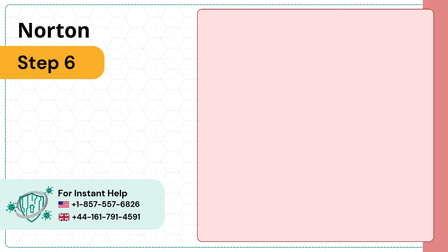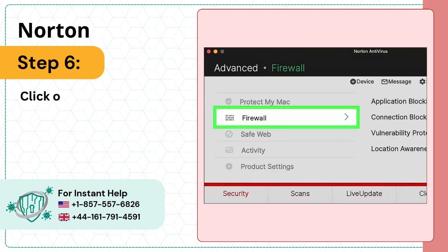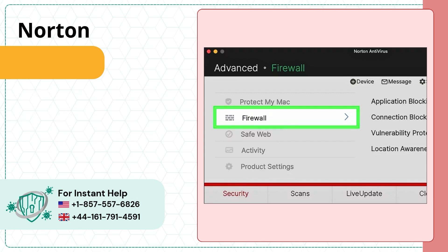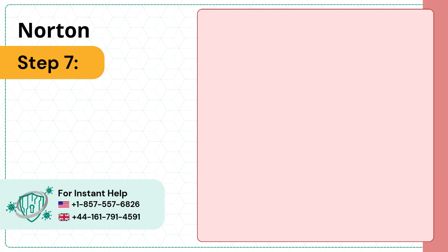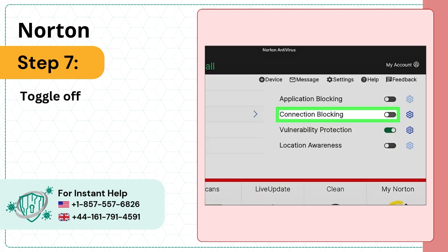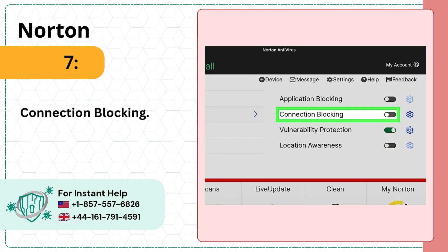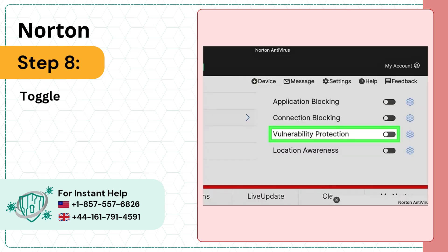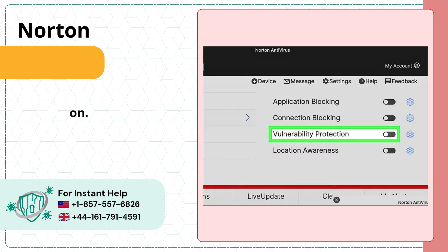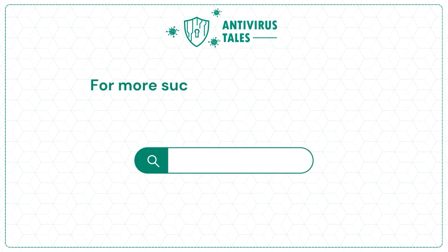Step 6: Click on Firewall on the left panel. Step 7: Toggle off Connection Blocking. Step 8: Toggle off Vulnerability Protection.